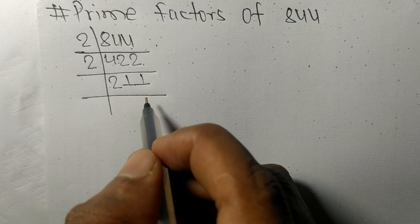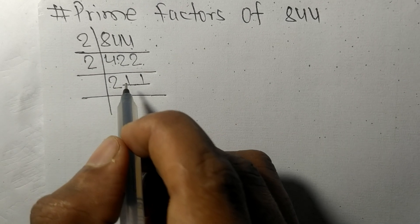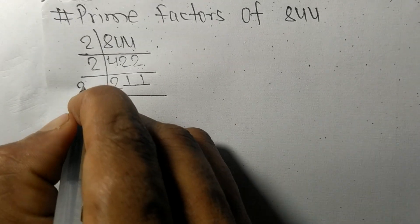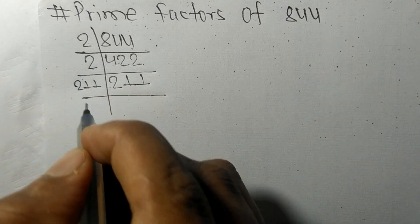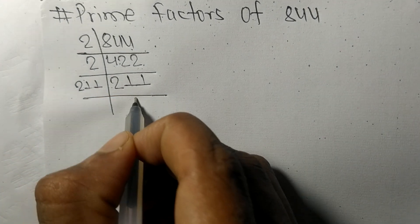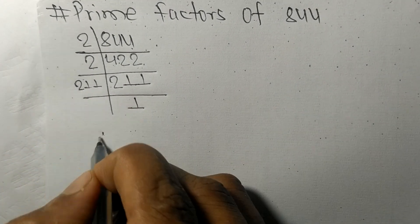Which is our prime number, so it is exactly divisible by 211 only, and on dividing we get 1.